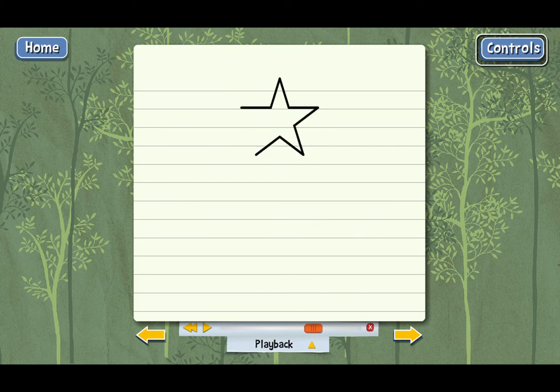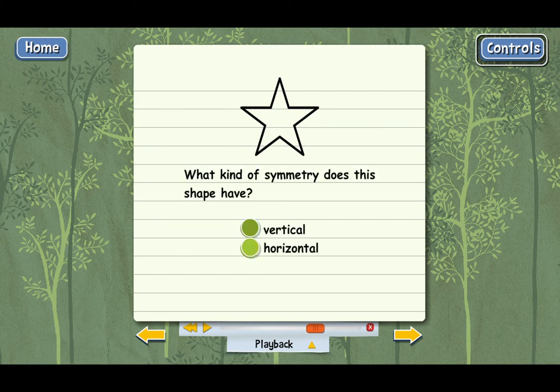Here's another figure. This has bilateral symmetry. But why don't you tell me, is the line of symmetry vertical or horizontal? You've got it. See, a vertical line cuts the star into matching halves. But a horizontal line won't. See, these two halves are different.